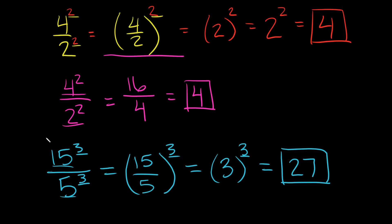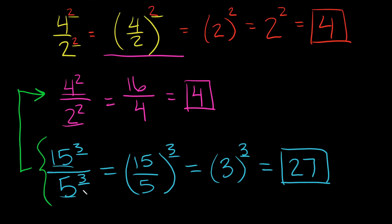As you can see, the direct computation method would be much harder here. 15 squared is 225, so 225 times 15 is something I can't do in my head, and then we'd have to divide by 5 cubed which is 125. The numbers just get bigger and more complicated, so the formula method is simpler — though for small numbers, the direct way is quick enough.